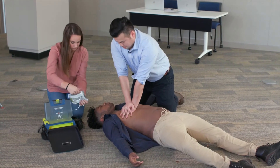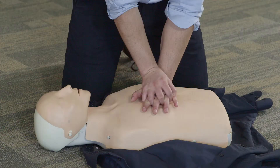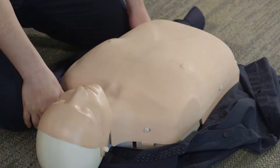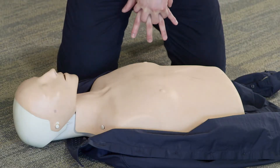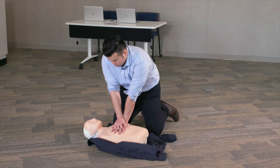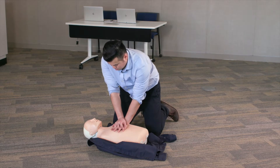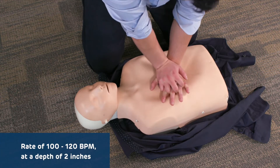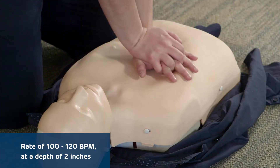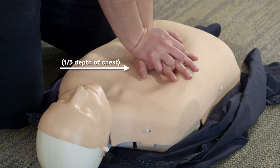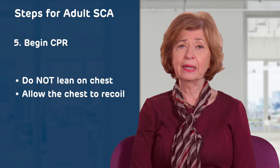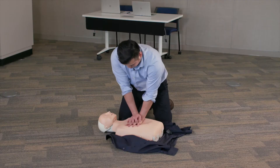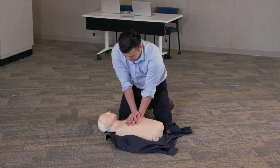Begin hands-only or compression-only CPR. Put the heel of one hand over the lower end of the breastbone in the center of the chest at the nipple line. Cover with the other hand and interlock your fingers. Straighten your arms and lock your elbows so that your body weight is over your hands. Push straight down at a rate of 100 to 120 beats per minute at a depth of 2 inches, about one-third the depth of the chest. Make sure you are not leaning on the chest and you are allowing the chest to recoil or expand completely after each compression. Count out loud when doing the compressions.